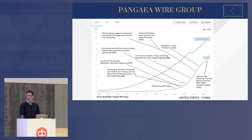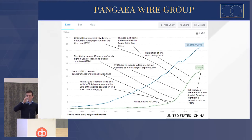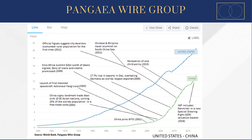This last graph shows the difference between the US and China in their GDP growth and also in their power. We can see a steep rise in China's GDP, which corresponds to their steep rise in international ambitions. China joined the WTO in 2001, signed trade agreements with 10 Southeast Asian nations uniting 25% of the world's population, and launched their first manned spacecraft — making them the third nation in history to do so. The Sino-African summit began, and in 2009 a 17.7% rise in exports saw them overtake Germany as the world's largest exporter.